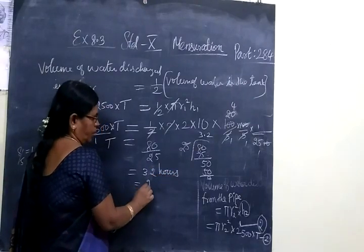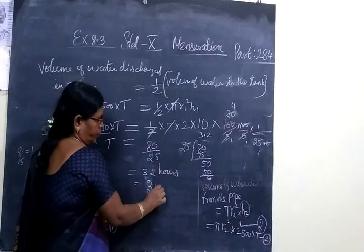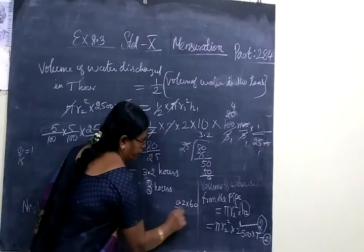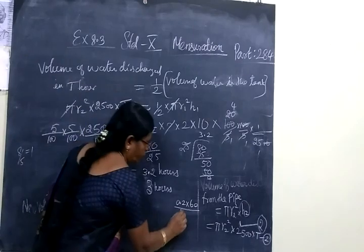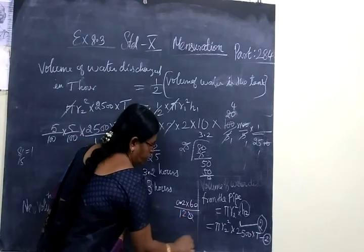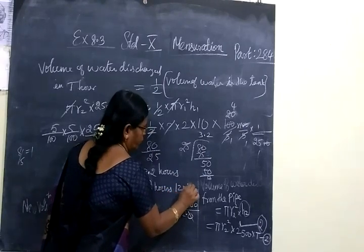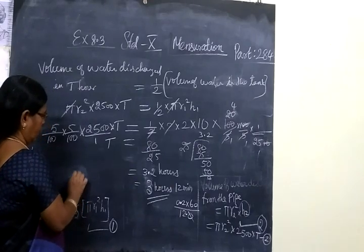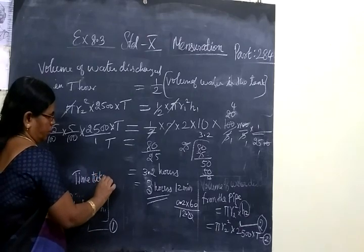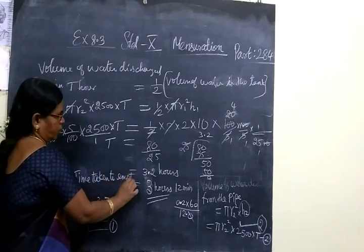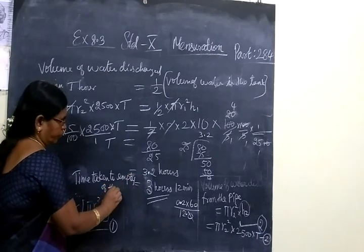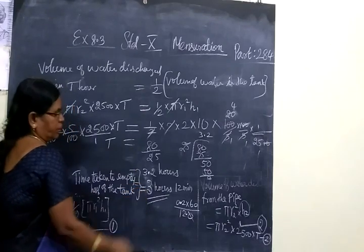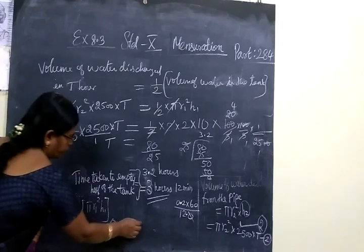80 divided by 25 is 3.2 hours. If you want to change into minutes, 0.2 multiplied by 60 minutes equals 12 minutes. So 3 hours 12 minutes. Time taken to empty half of the tank is equal to 3 hours 12 minutes. Thank you.